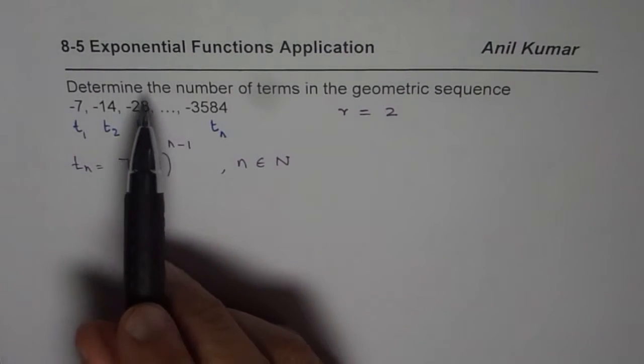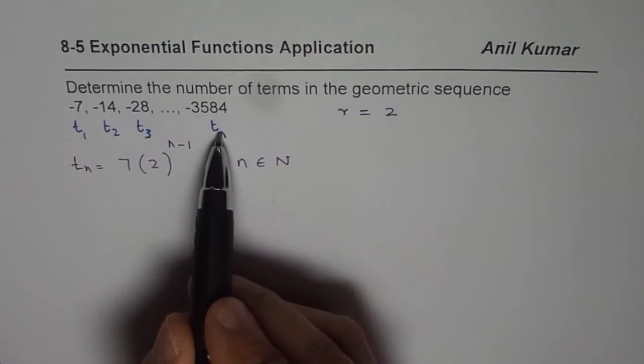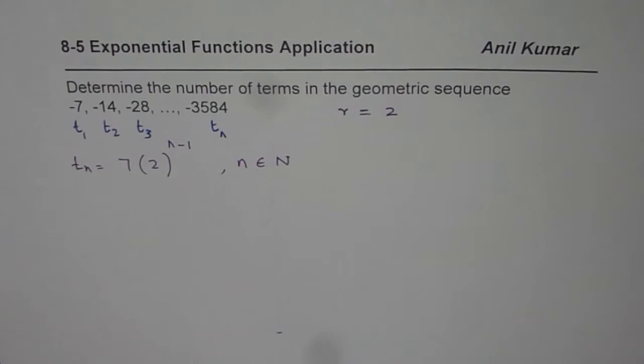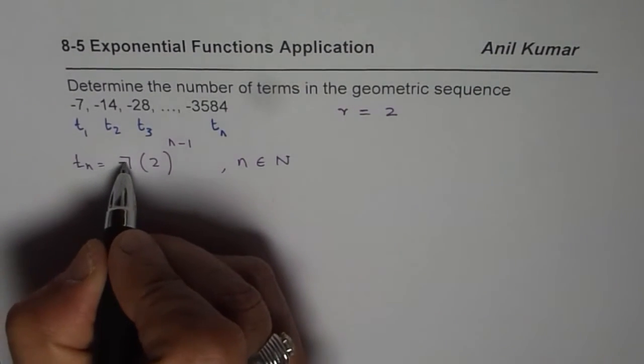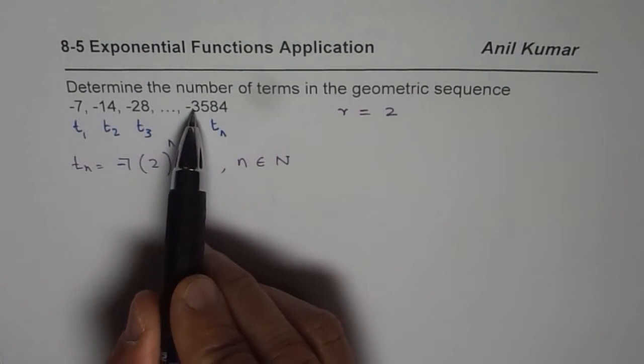Now read the question once again. It says, determine the number of terms in the geometric sequence. So we know the nth term is minus... oh, I forgot to write minus here, so let me add minus. It is minus 7 times all this.